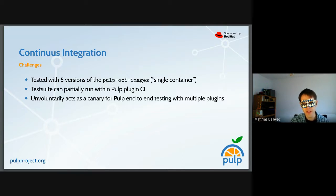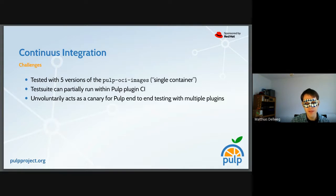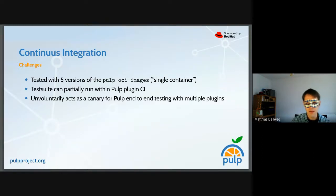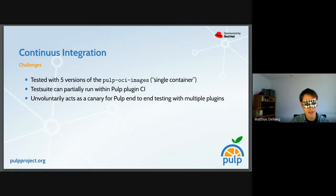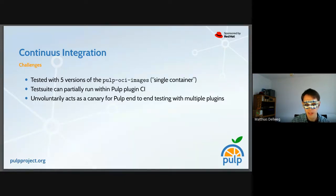We don't catch all issues that way. It turns out that the CLI — as well as Squeezer — involuntarily act as a canary for end-to-end tests with multiple plugins, by virtue of the nightly container which installs all components from source each night. So the next day the CLI may be broken on the nightly container. I wouldn't say this is a bad thing — it's just something interesting to know, and everyone should check from time to time. We can discuss ways to catch those errors earlier.